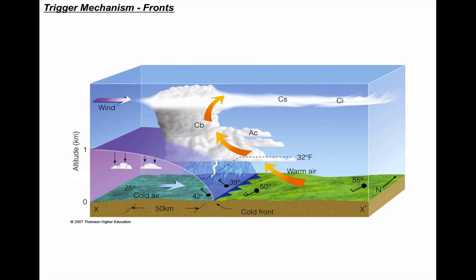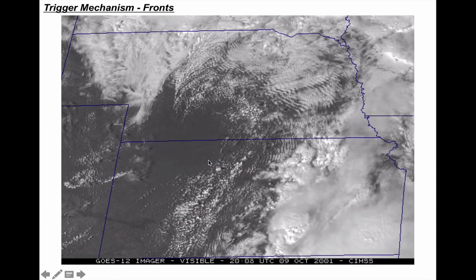Let's look at a few trigger mechanisms. Here's a cross-section of a front: cold, dense air coming from the north out of Canada, meeting warm, moist air from the Gulf of Mexico. The warm moist air is less dense, so the cold air undercuts it and the air rises. If the atmosphere is unstable, you get massive cumulonimbus clouds making huge thunderstorms.